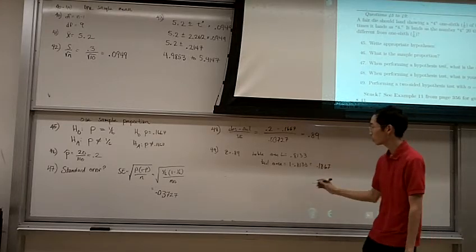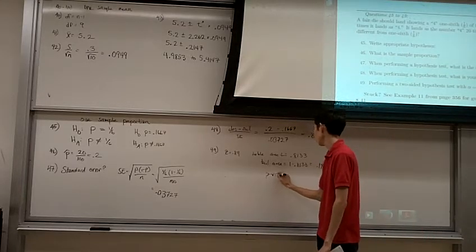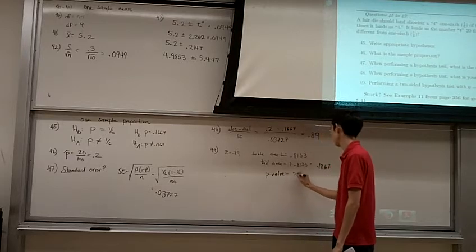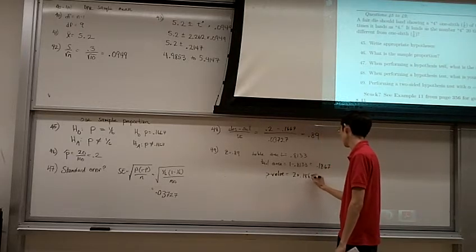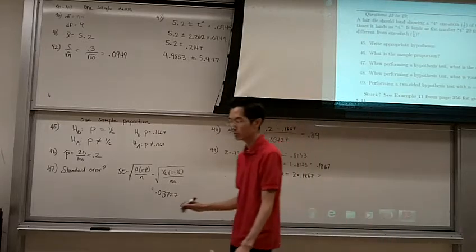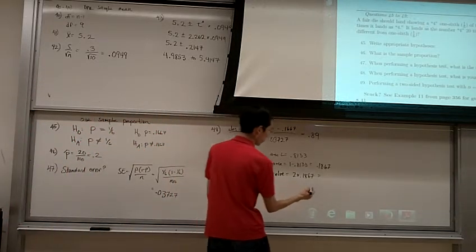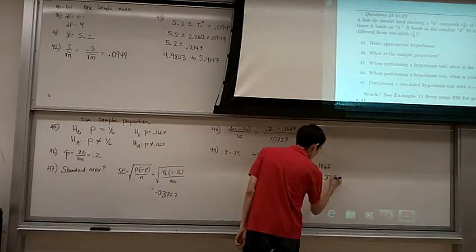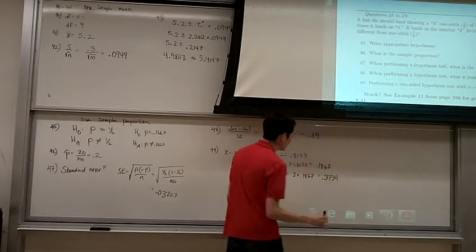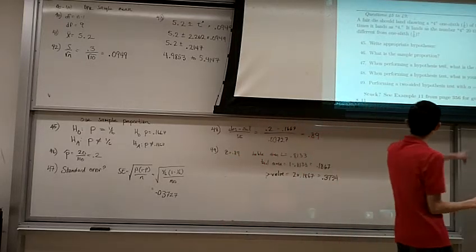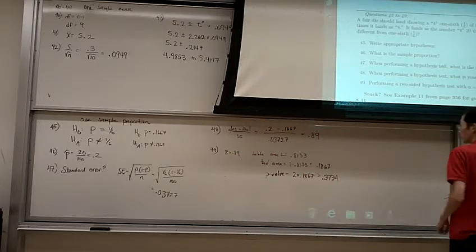And you double it. And I double it. Okay, so my p-value is equal to 2 times 0.1867, that's 0.3734. So it's greater than 0.3734. 0.3734 is greater than alpha equal to 0.05.